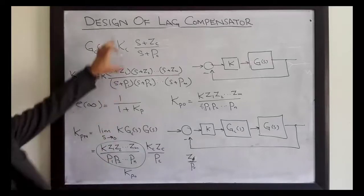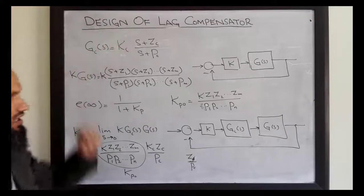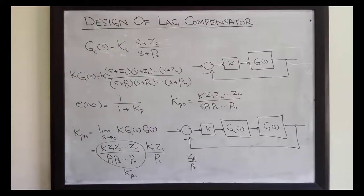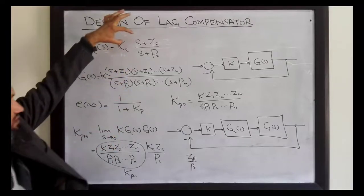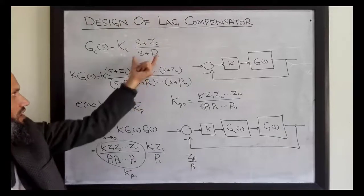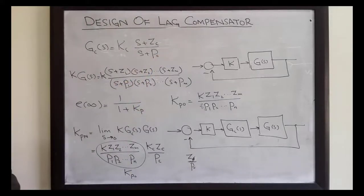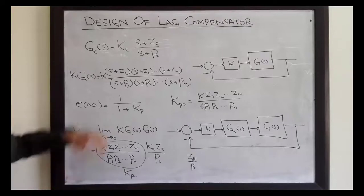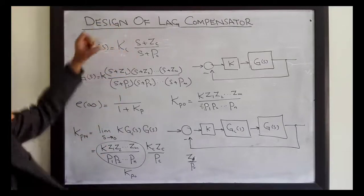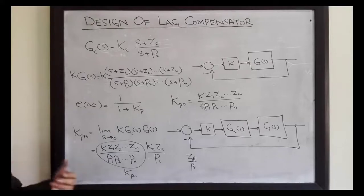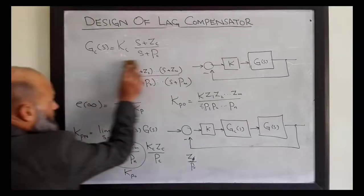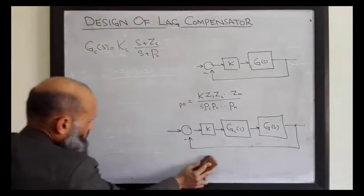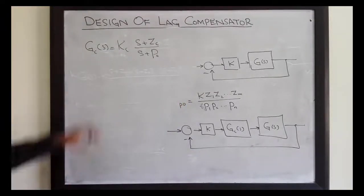What will be the effect of adding this compensator on the transient characteristics? If we add a compensator, there will be an angle contribution due to the zero and angle contribution due to the pole. This will distort the root locus and hence the transient characteristics will also be disturbed. But if we do not want to change the transient characteristics, we want no angle contribution due to this compensator.